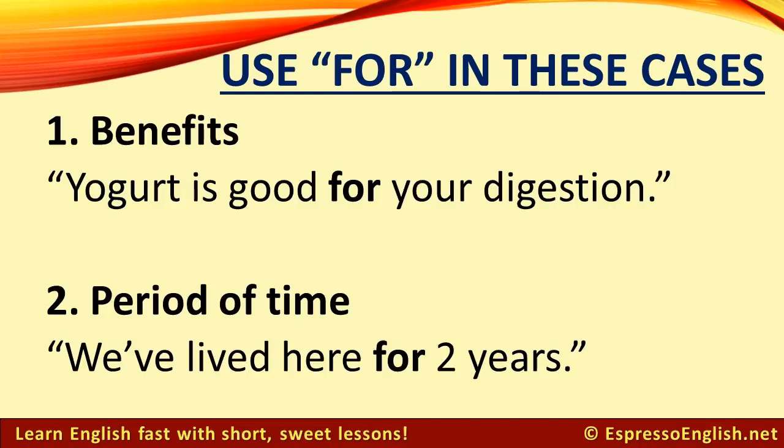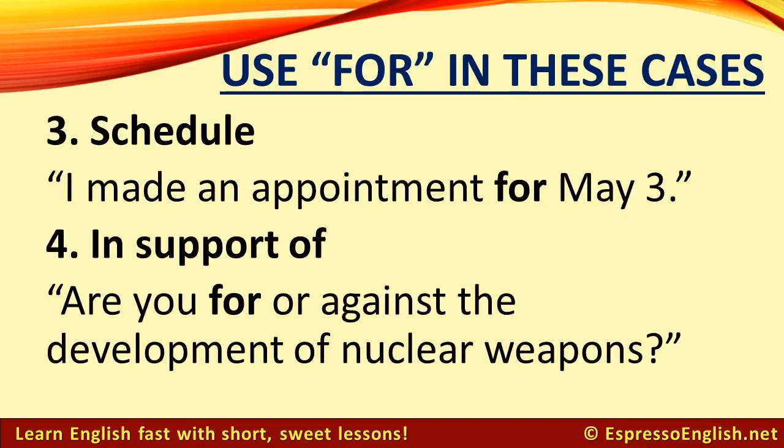Use 'for' when talking about a period of time. For example, 'We've lived here for two years.' You can also use 'for' when talking about scheduling. For example, 'I made an appointment for May 3rd.'